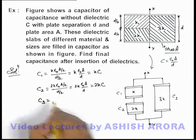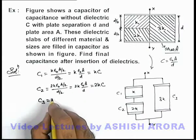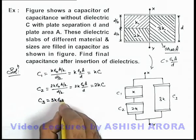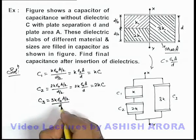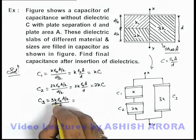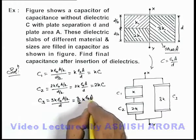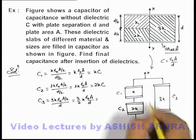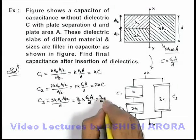Similarly, for capacitance C3, this will be 3k·ε₀ multiplied by plate area A/2, but the plate separation is d. On simplifying, we get 3/2·k·ε₀·A/d, so the resulting capacitance C3 is 3/2·kC.